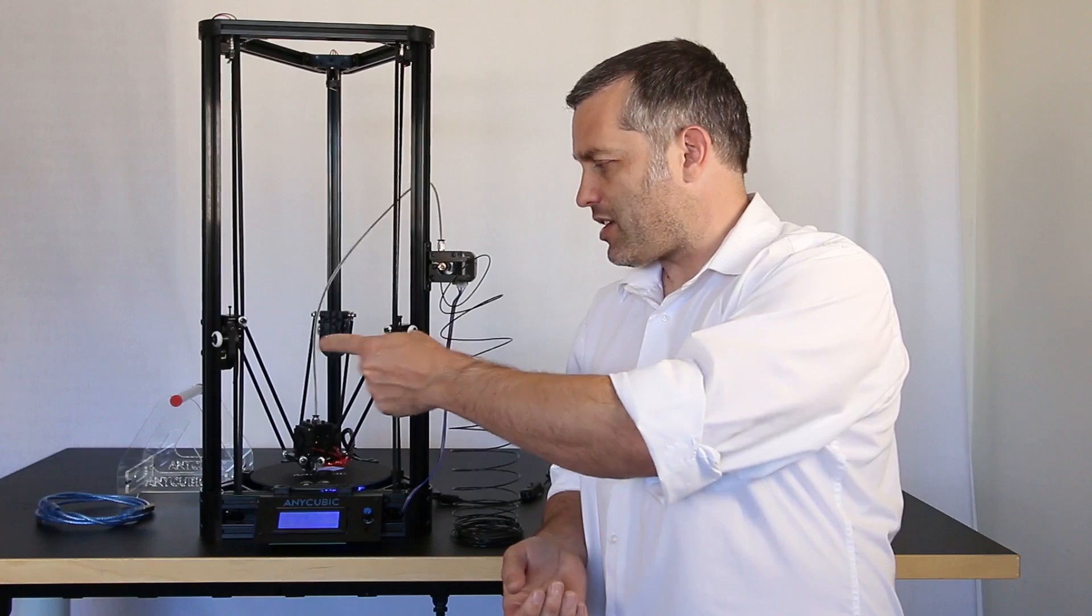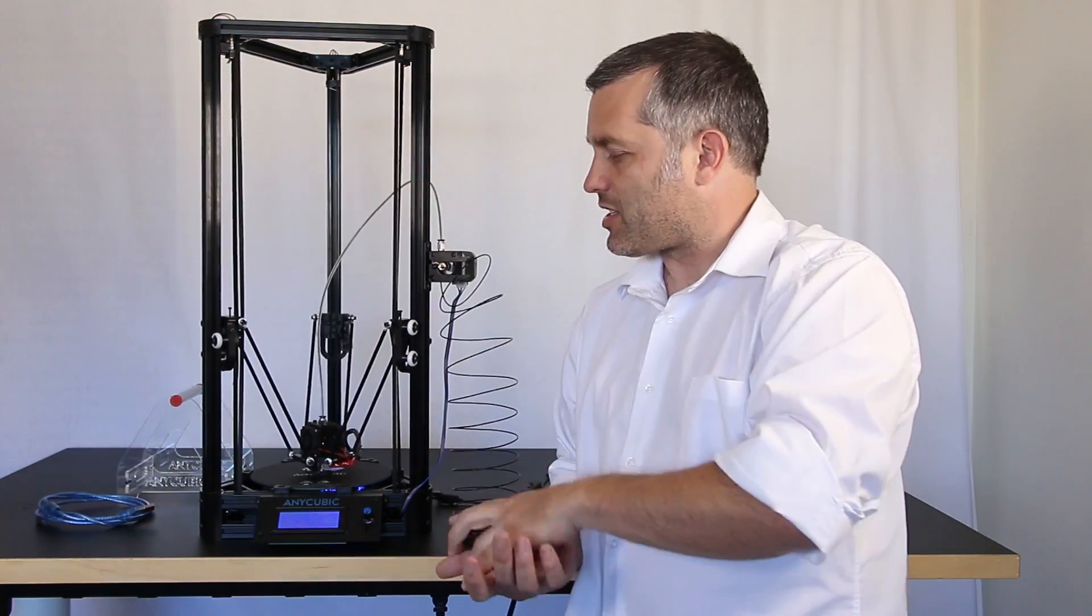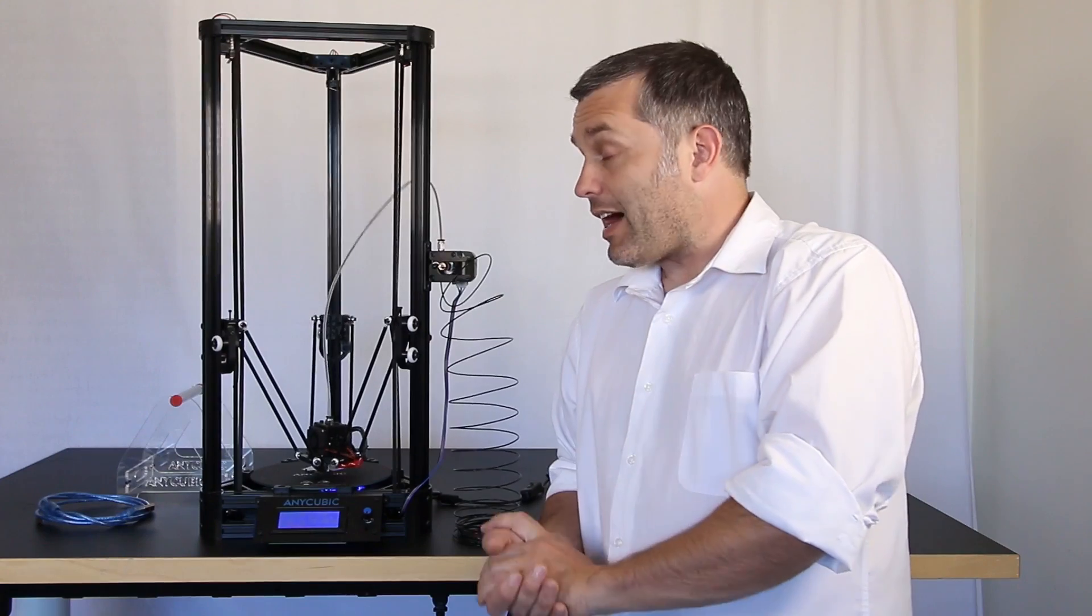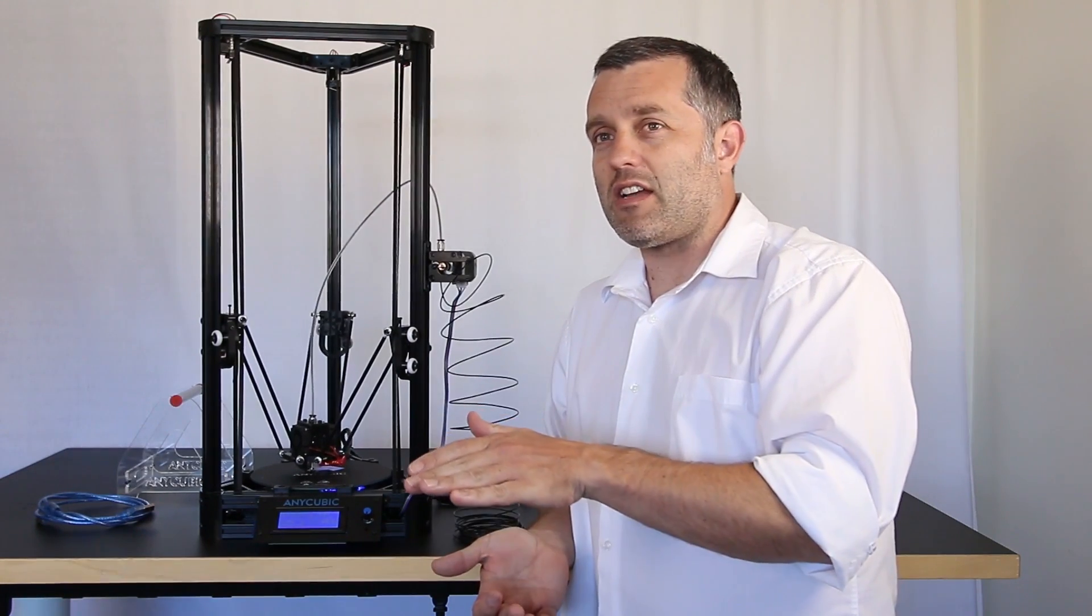This is the Anycubic Kossel, also goes by the name of the Kossel Mini. It has a 180mm diameter circular bed because it is a delta style printer. Now I got this printer from Gearbest.com and it costs $170, which is the lowest price that I have seen as of today on the internet.